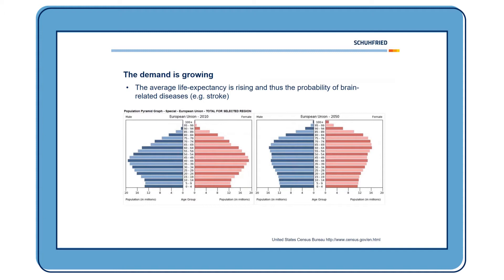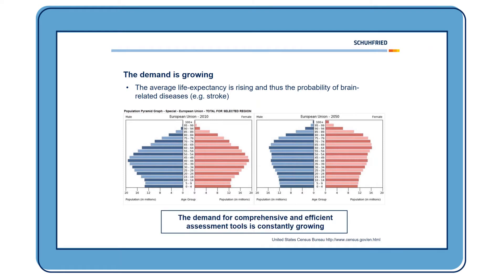Another important point is that the demand for neuropsychological assessment is growing. As you might know, average life expectancy is rising, and with it the probability of brain-related diseases like stroke or dementia. You can see the population pyramid for the European Union in 2010 on the left, and for 2050 on the right. In the future, more people will be older, so the demand for comprehensive and efficient assessment tools is constantly growing.